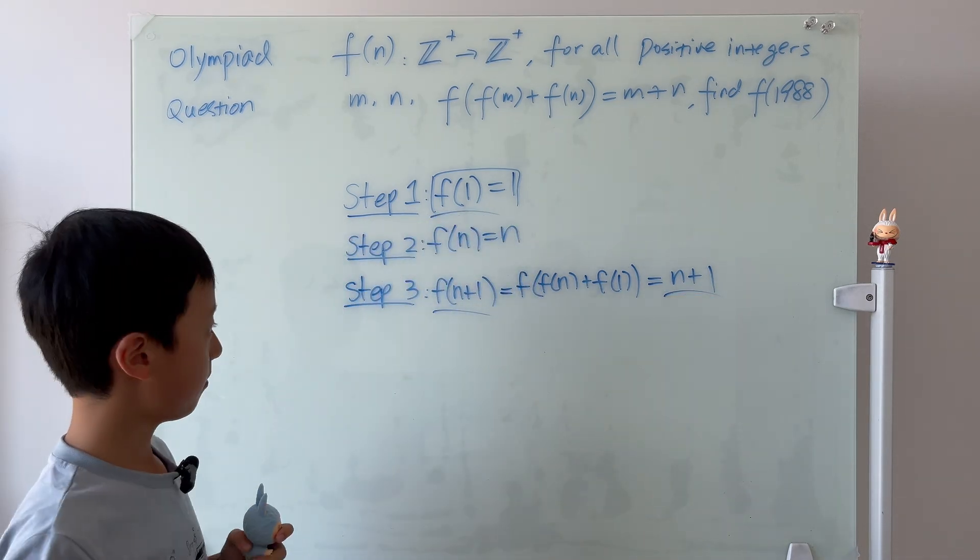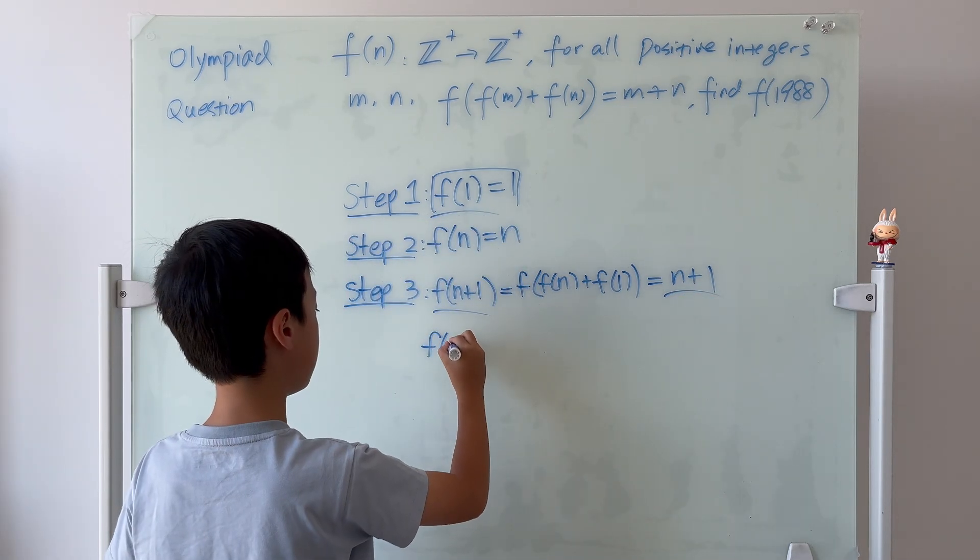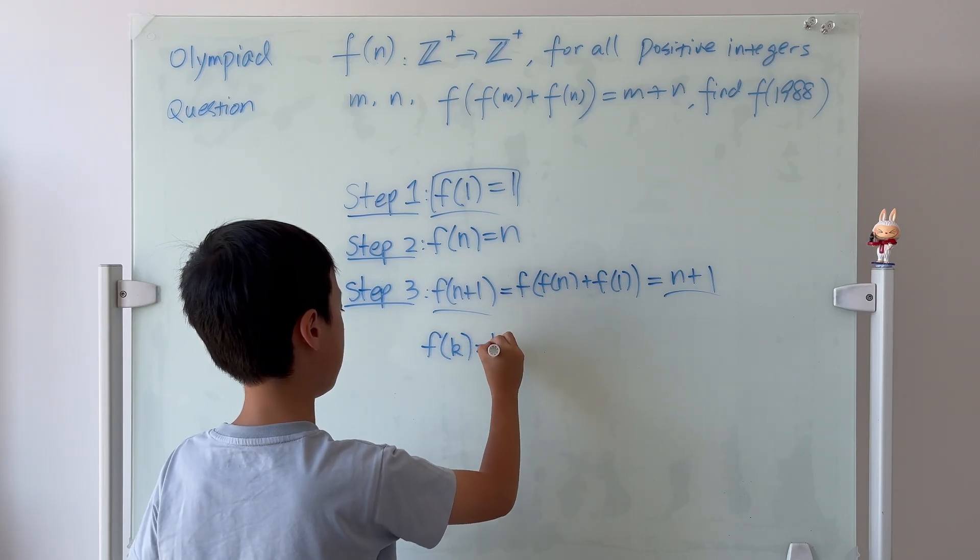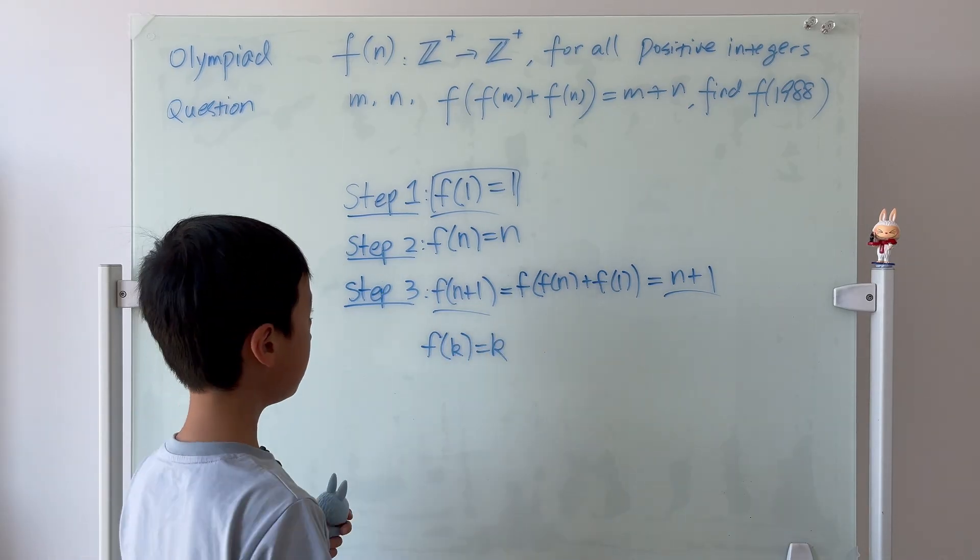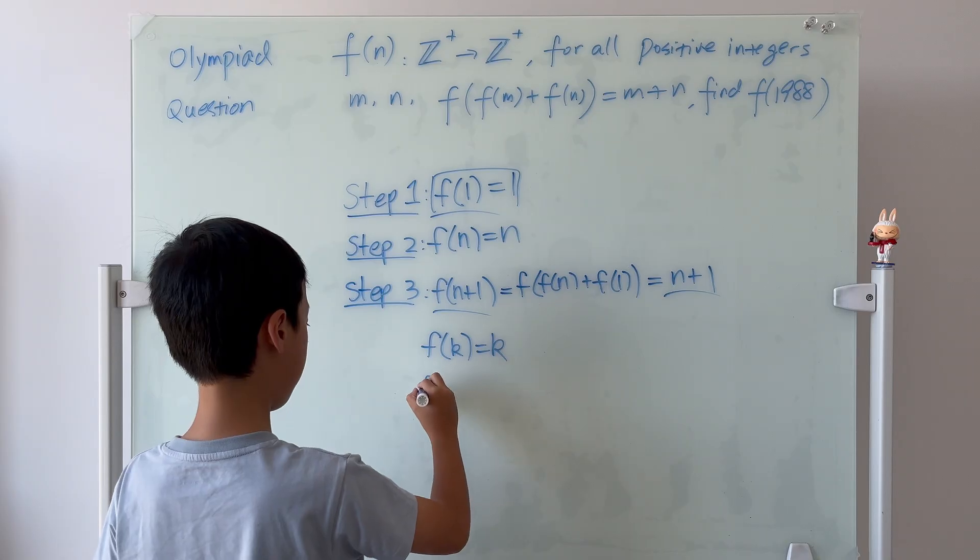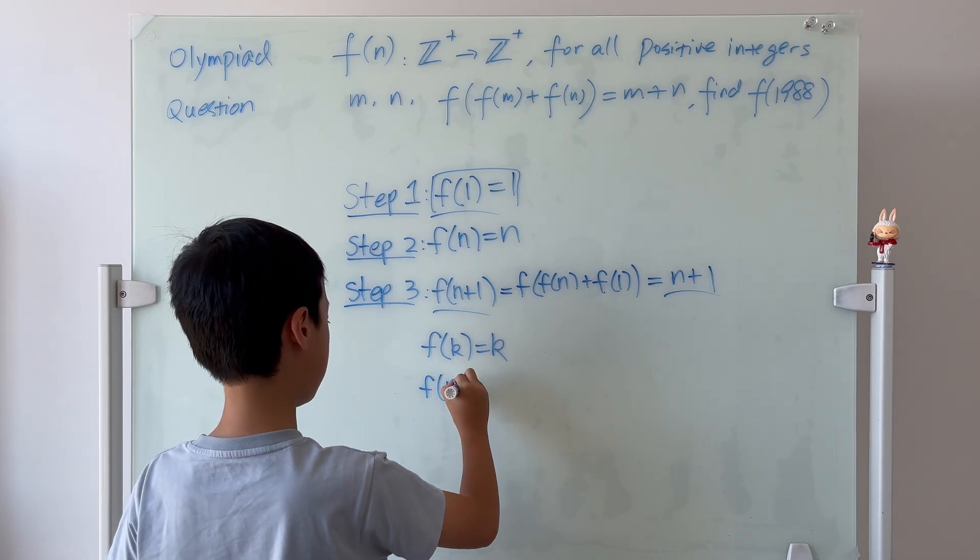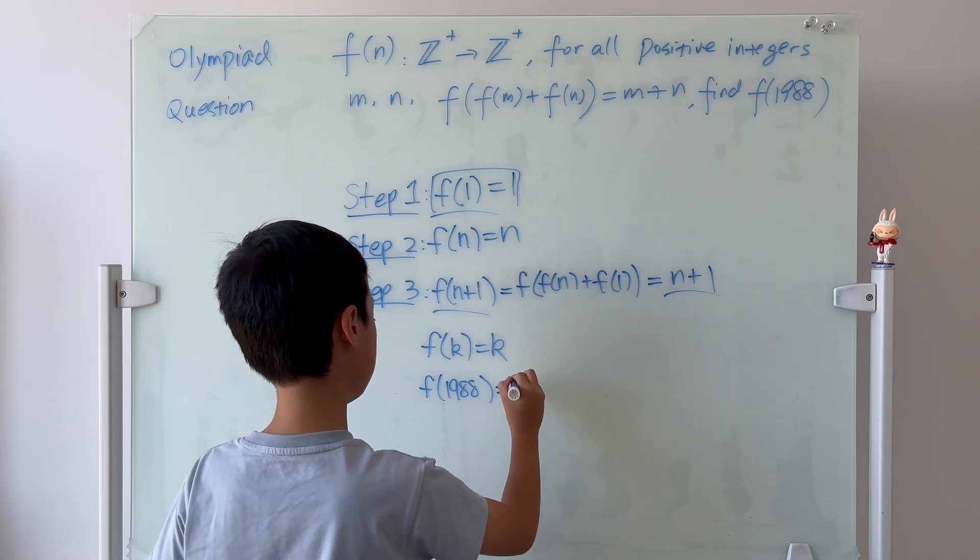So, step 3 done. f of k, I'm going to say, is equal to k, correct? So, we know that f of 1988 is equal to 1988.